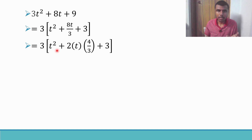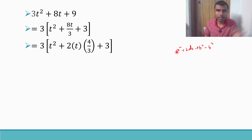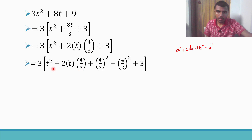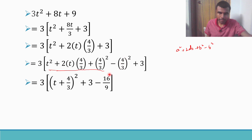Adding and subtracting (4/3)² completes the square: t² + 2·t·(4/3) + (4/3)² = (t + 4/3)². So the expression becomes 3[(t + 4/3)² − 16/9 + 3]. Taking LCM inside: 3 = 27/9, and 27/9 − 16/9 = 11/9. So the denominator is 3[(t + 4/3)² + 11/9]. Rewriting 11/9 as (√11/3)², I get the perfect square form.